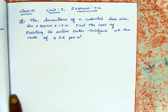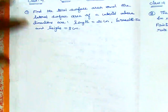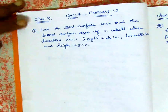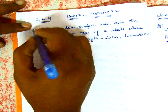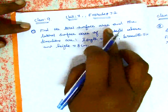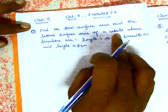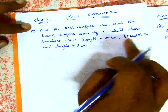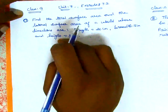Class 9, Unit 7, Exercise 7.2, Question No. 1. Find the total surface area and the lateral surface area of a cuboid whose dimensions are length, breadth and height.